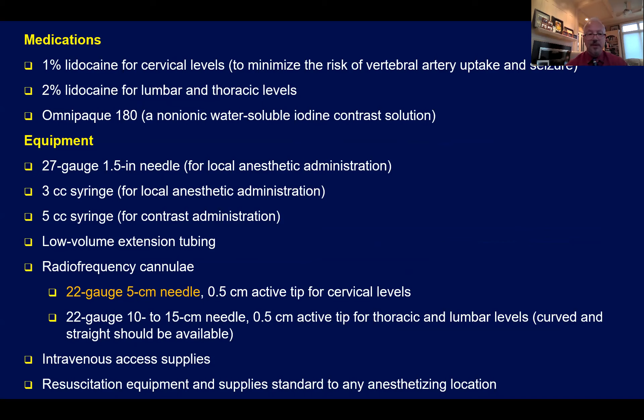Medications to be utilized include 1% lidocaine for the skin and subcutaneous tissues. Omnipaque 180 is typically used. I use a 27-gauge 1.5-inch needle for infiltrating the skin and subcutaneous tissues, along with a couple of syringes — 3 cc and 5 cc. Extension tubing is very useful because it provides an immobile needle, not directly connecting the syringe to the needle itself. If you move your hand with the syringe, you won't displace the needle out of the neuroforamen. For pulsed radio frequency, I typically use a 22-gauge 2-inch or 5-centimeter needle with a 5-millimeter active tip.